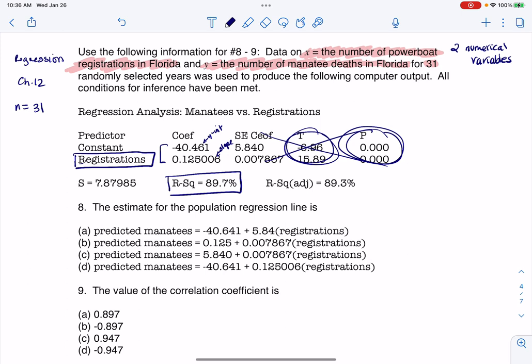Let's read this question: the estimate for the population regression line is... Well, if I want my regression line, that's going to be ŷ = a + bx. We're going to get those values right off of the Minitab table. So there's my a value of -40.461, and my b value is right below it. It looks like it's about, I'm going to just round that to 0.125.